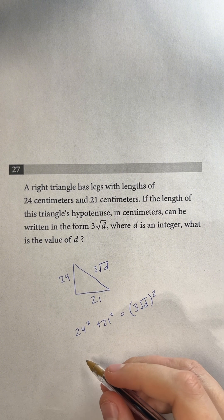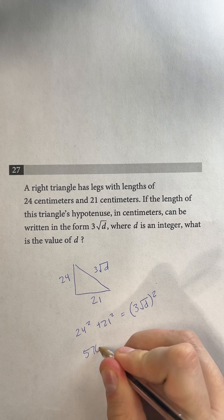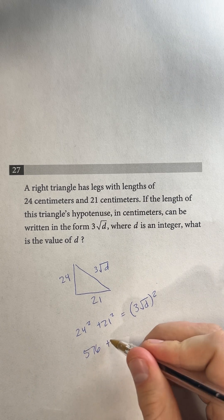So this first part, 24 squared, is going to be 576. And then 21 squared is 441.